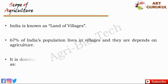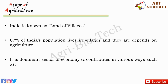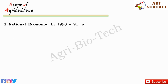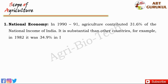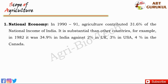Agriculture is the dominant sector of the economy and contributes in various ways to the national economy. In 1990-91, agriculture contributed 31.6% of the national income of India, which is substantial compared to other countries.